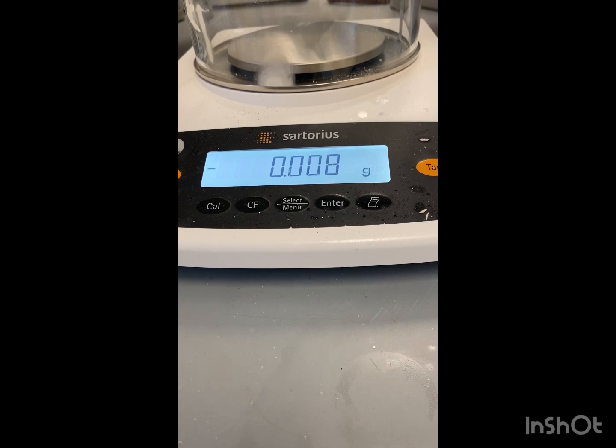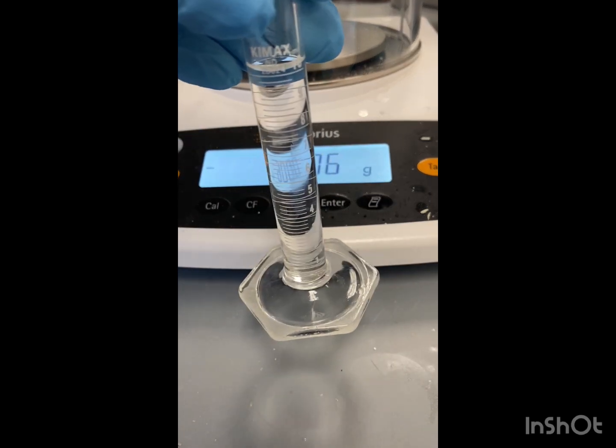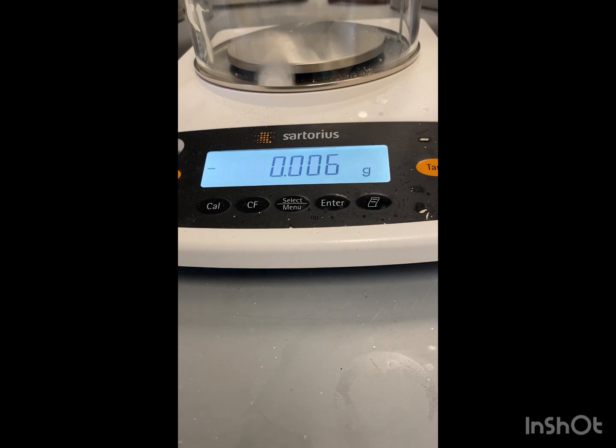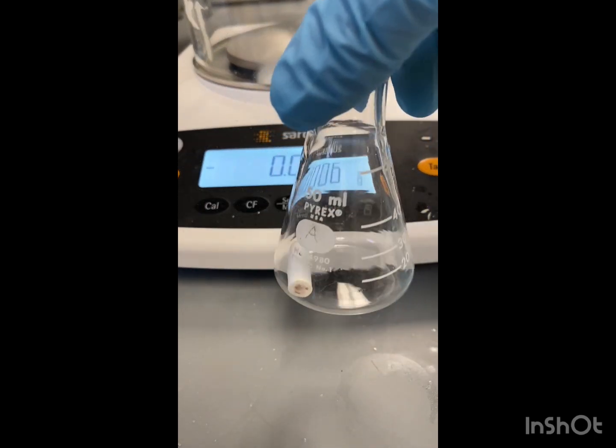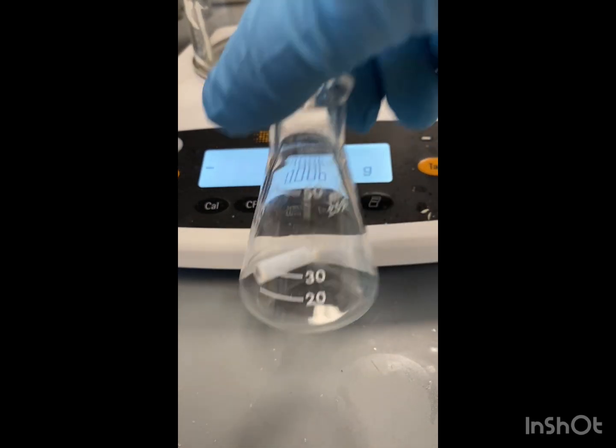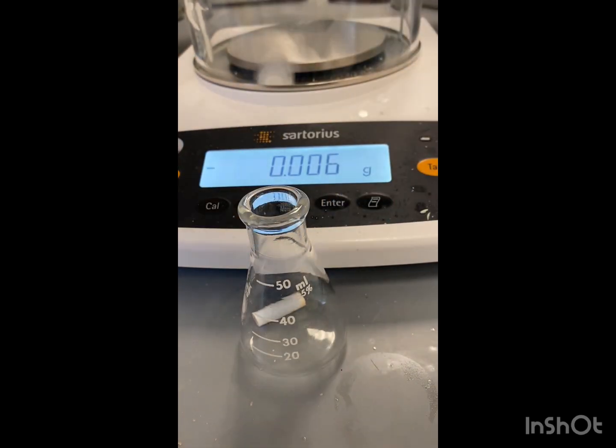All right, so we have our gloves and goggles on. First we're going to get 10 mils of ethanol, which is our solvent. So here's our 10 mils of ethanol and we're going to add it to our Erlenmeyer flask with our magnetic stir bar.